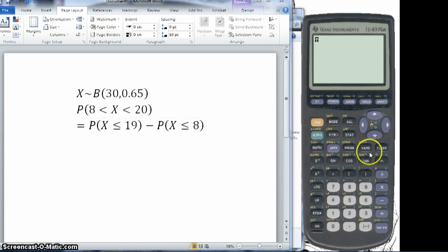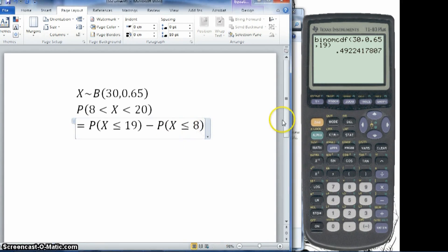So we want to go into the distributions. So 2nd and then VARS. Go down to binom CDF, because we want the cumulative probability. Press Enter. Now, we input it as N, so that's 30, comma, P, the probability, 0.65. And comma, the first one we're going to do is 19. So 19, and close the bracket. And that gets us this probability here. So we have 0.4922417807.